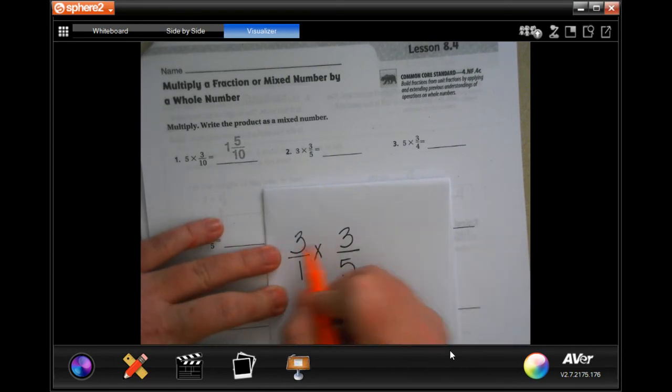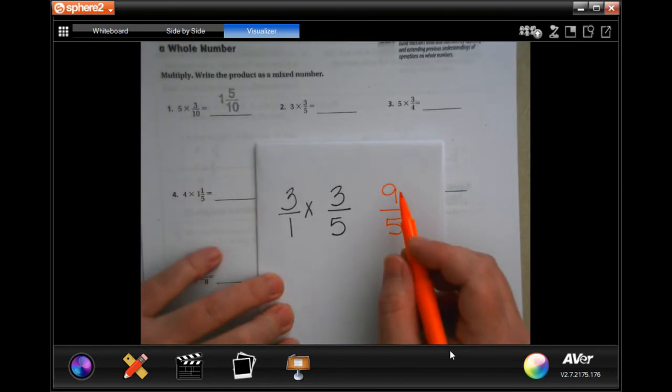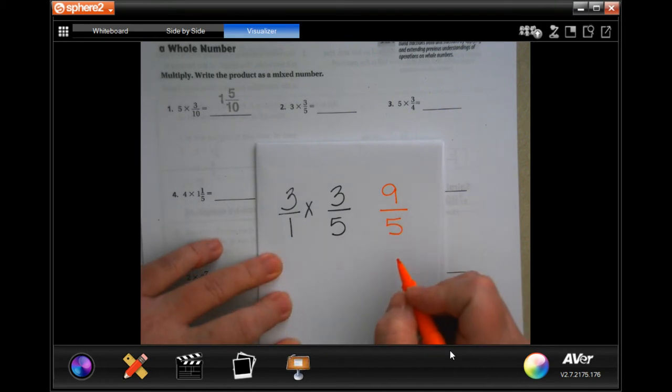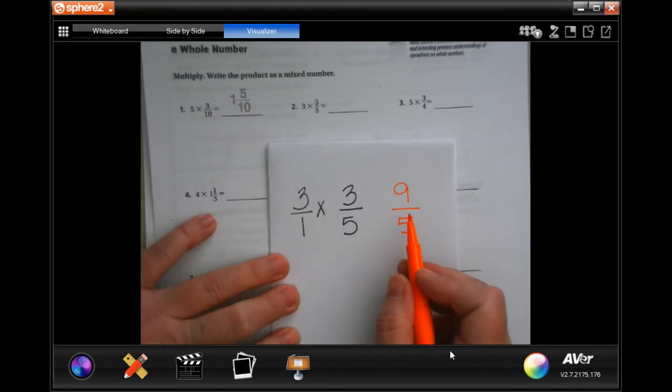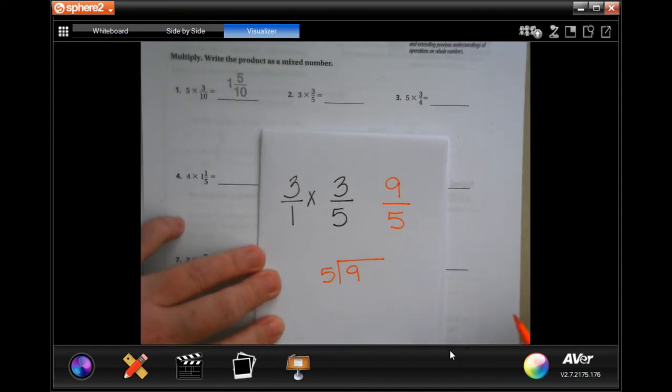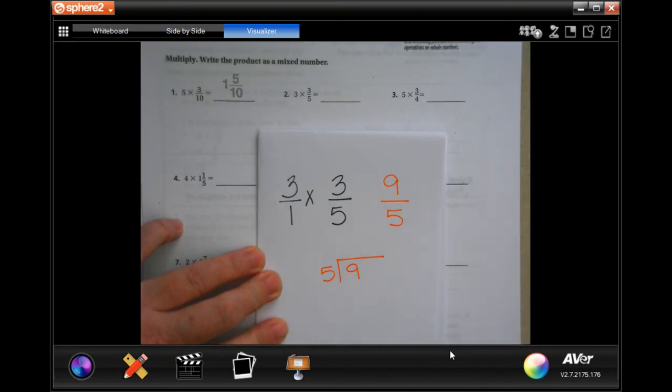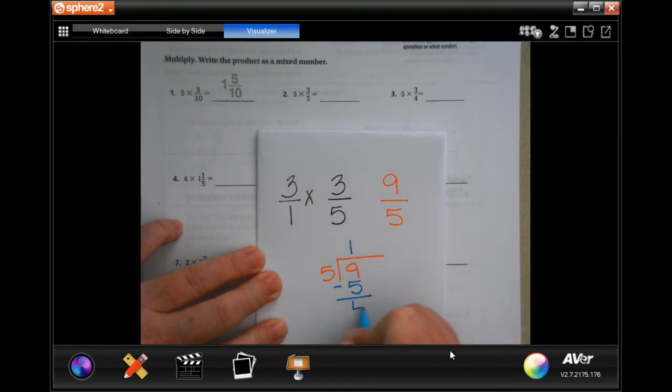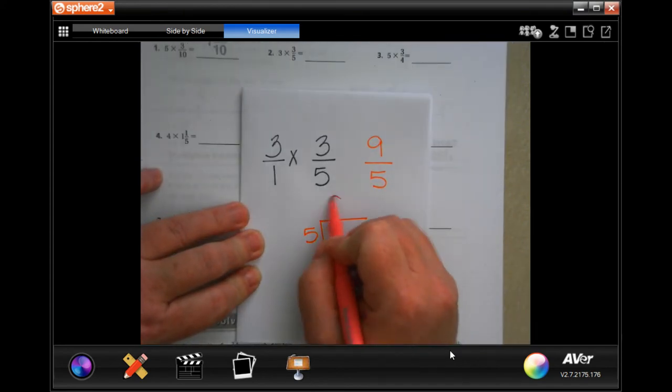So now 3 times 3 is 9, and 1 times 5 is 5. So now, in order to get it from an improper fraction where the top is bigger than the bottom, to a mixed number, which is just a whole number with a fraction, I need to do some division. So I know that the top number goes in the box, the bottom number goes outside the box.